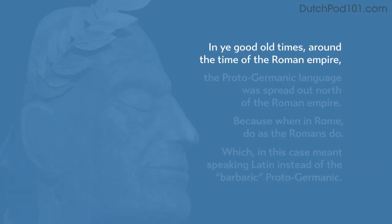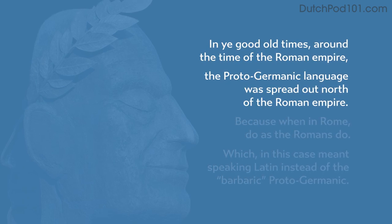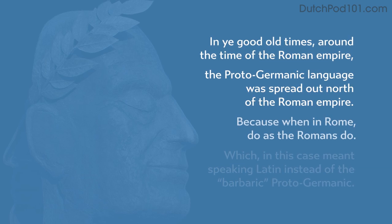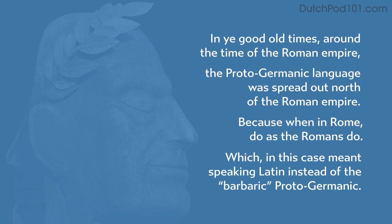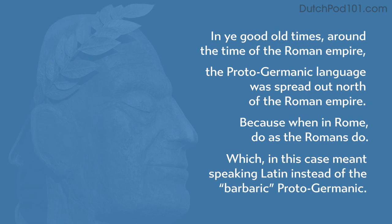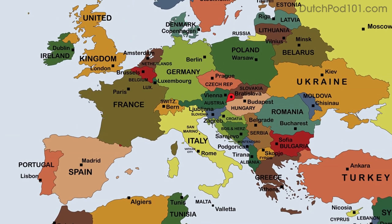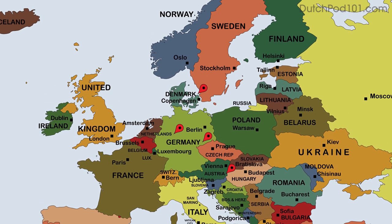In your good old times, around the time of the Roman Empire, the Proto-Germanic language was spread out north of the Roman Empire. Because when in Rome, do as the Romans do — which in this case meant speaking Latin instead of the barbaric Proto-Germanic. North of the Roman border, so in Austria, Germany, the Netherlands, Denmark, and part of Scandinavia, Proto-Germanic was the most important language.